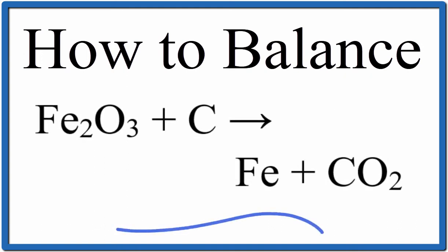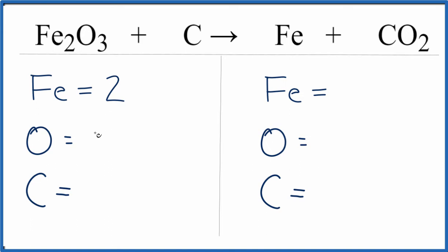To balance this equation, Fe2O3 plus C yields Fe plus CO2. Let's count up the atoms on each side of the equation. We have two irons here, three oxygens, and then just one carbon.